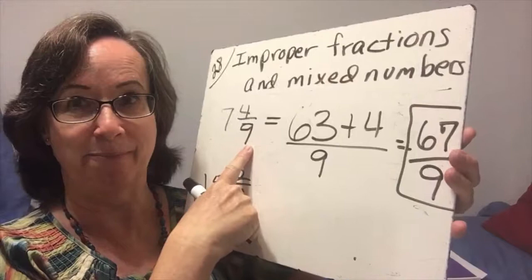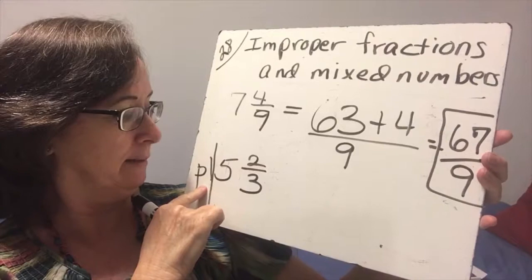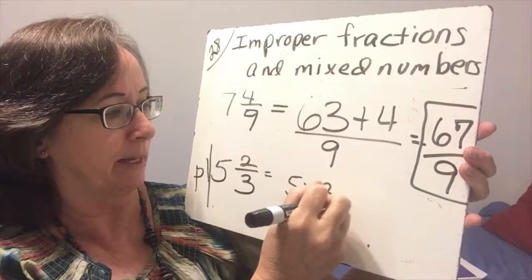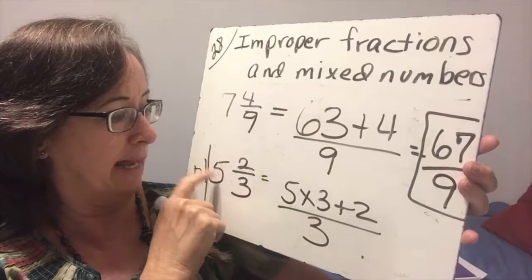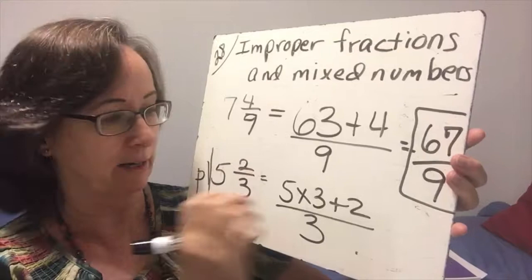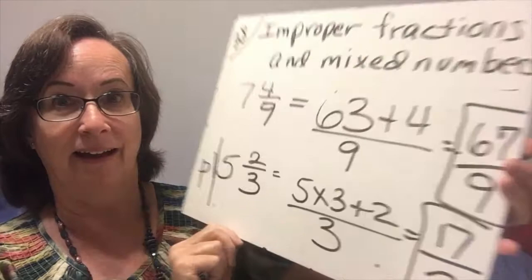This is actually practice number one. So 5 and 2 thirds is 5 times 3 plus 2 on the top and then just the 3 on the bottom because we're saying 5 holes and 3 parts in every hole would be 15 plus the 2 extra is 17 over 3 would be the correct answer. That's your first practice problem.